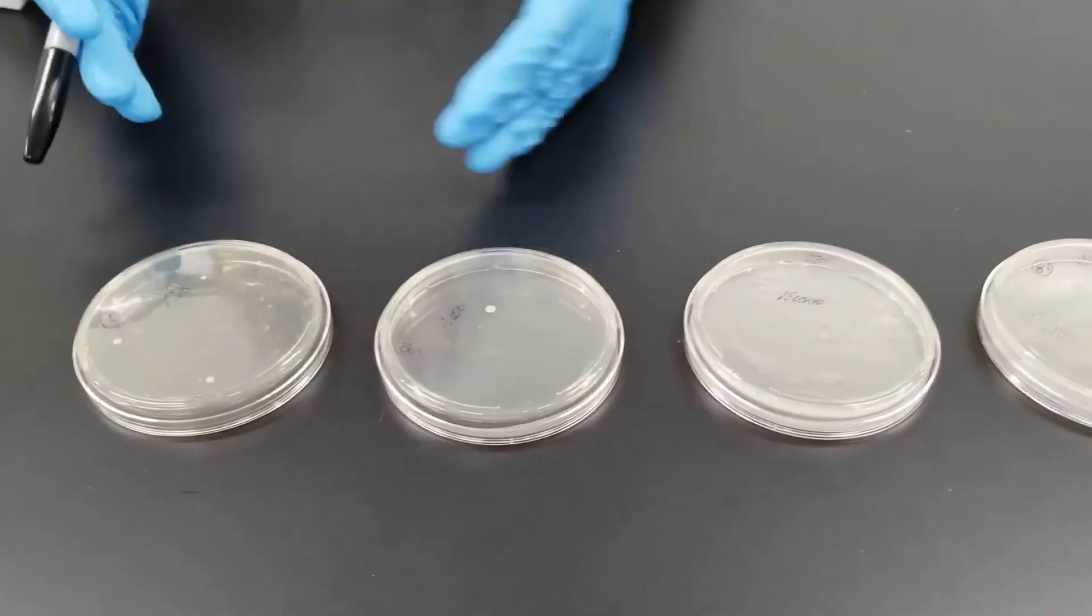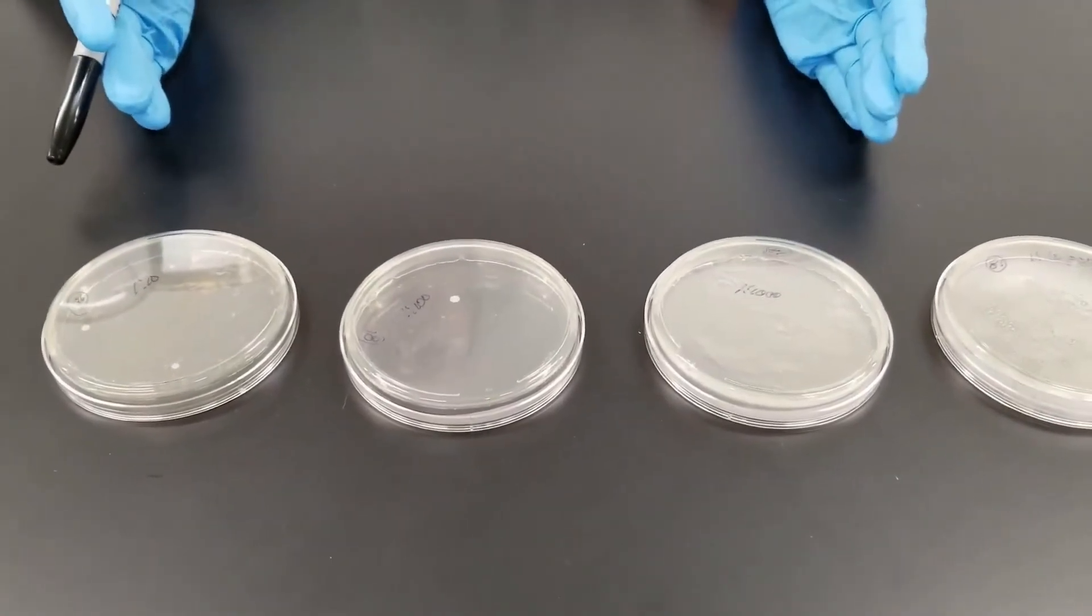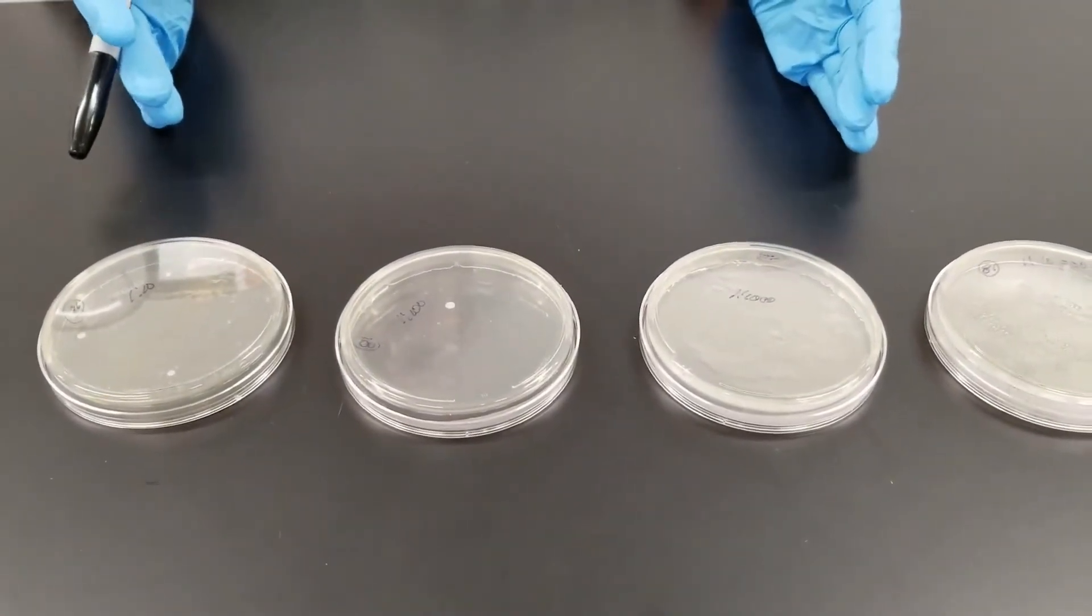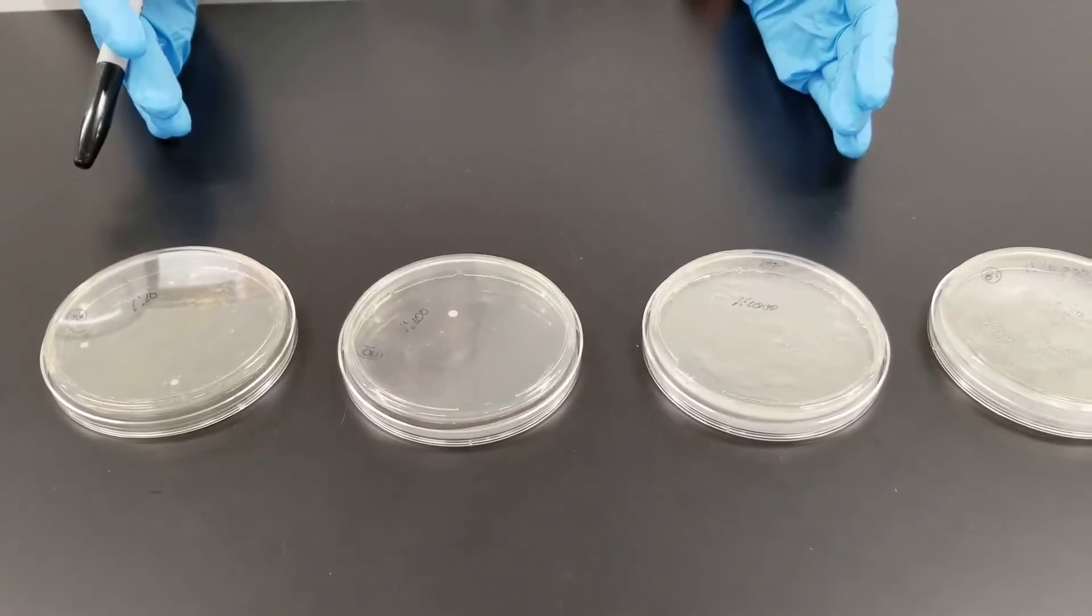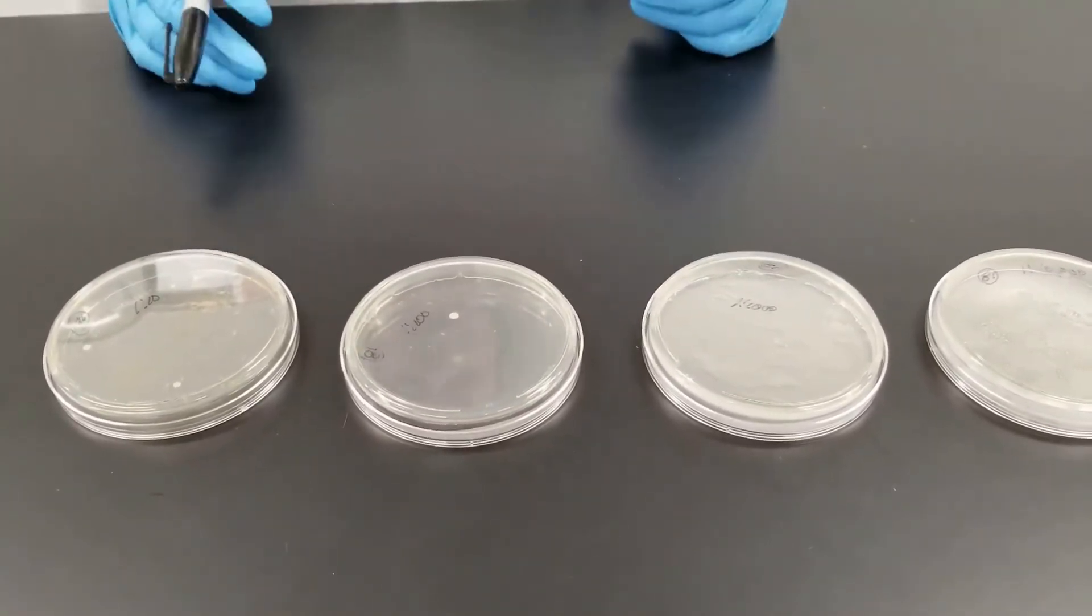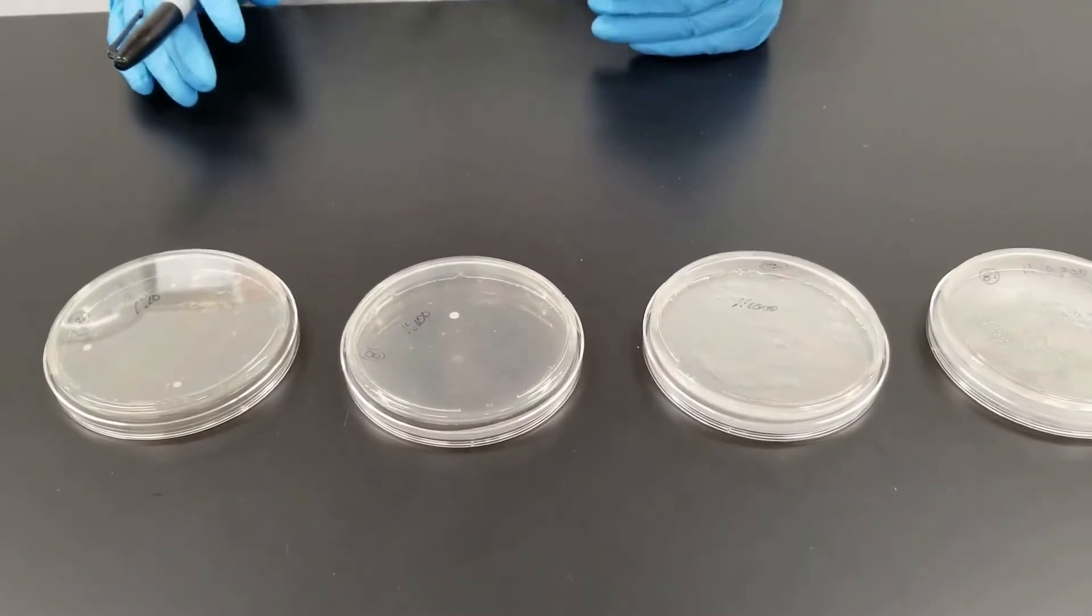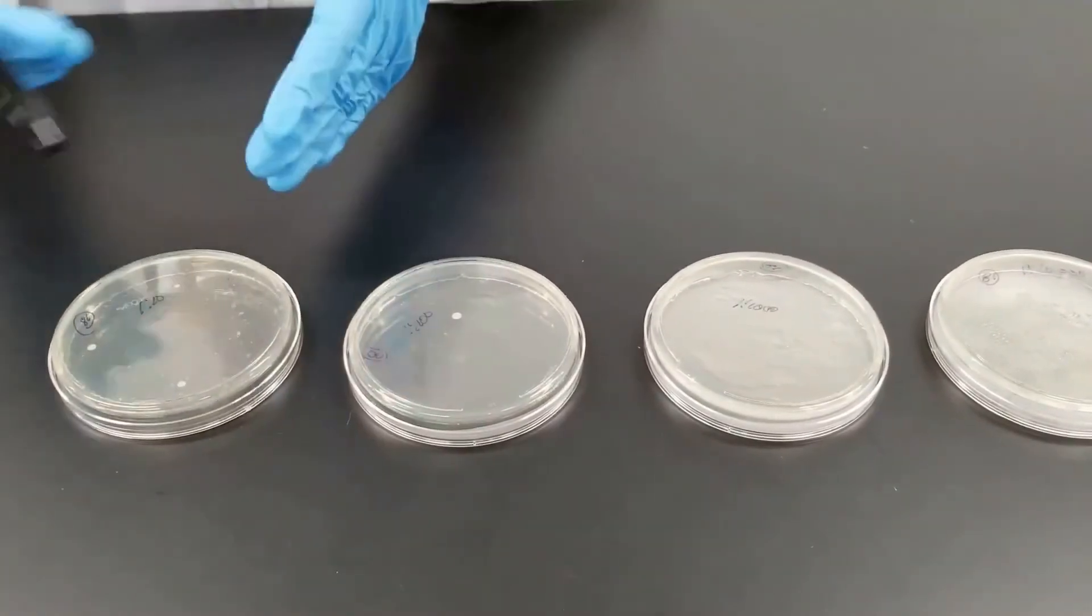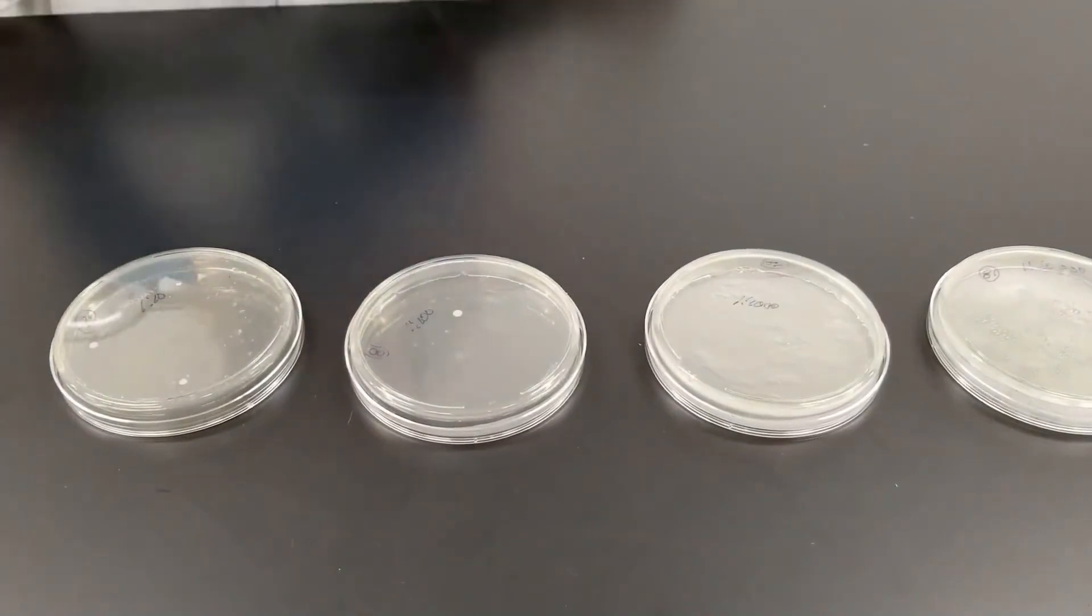So we're trying to hit a range where, when we count colonies, we only count between 30 and 300. So we're trying to hit within that range when we did the plate counts. These are pour plates, so we've mixed in the solution, the medium, and then poured the agar on.